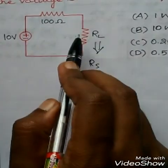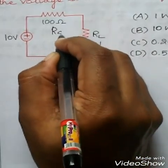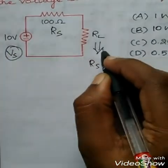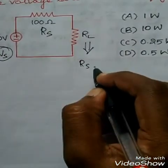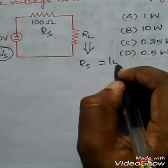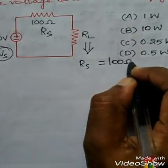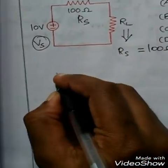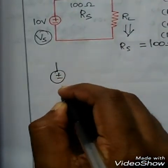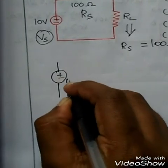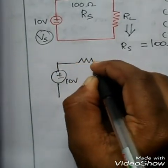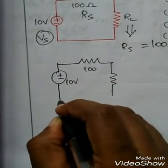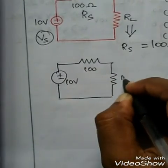The given circuit is already in its equivalent form. That is, this is the value of RS and this is the value of VS. So what is the value of RL? RL will be equal to RS — that is, RS value will be equal to 100 ohms. I am redrawing this circuit with its equivalent values: 10 volt, here 100 ohms, and here the value of RL will also be 100 ohms.